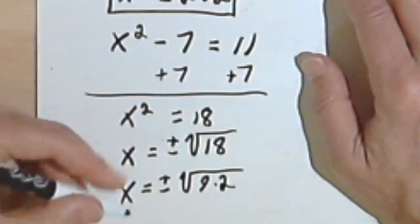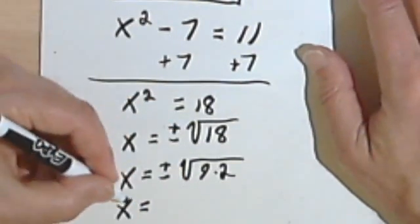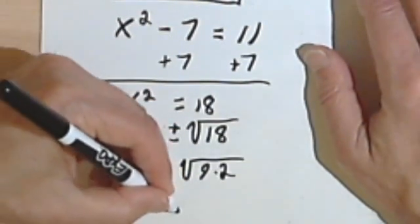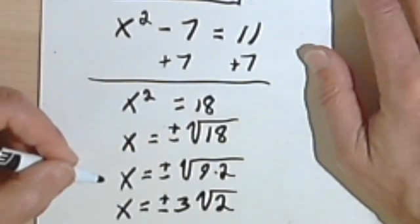So x equals plus or minus the square root of 18 is 9 times 2. 9 is a perfect square. So I'll take that square root out. I'm going to have x equals plus or minus 3 times the square root of 2.